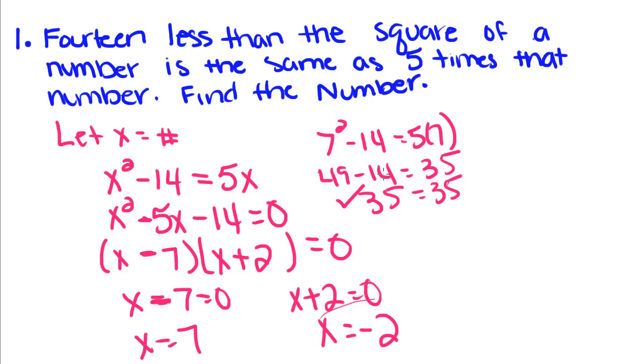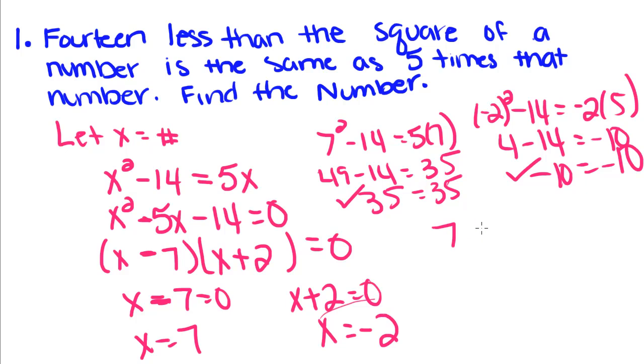And we have to make sure that the other one doesn't, or does as well. So we have negative 2 squared minus 14 equals negative 2 times 5. This is 4 minus 14 equals negative 10, negative 10 equals negative 10. So those both work. That means the number is either 7 or negative 2, and it's possible to have more than one correct answer for these problems.